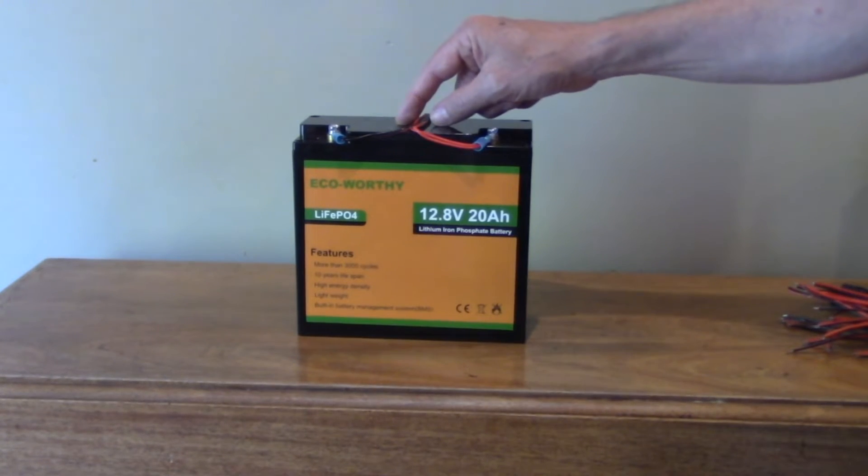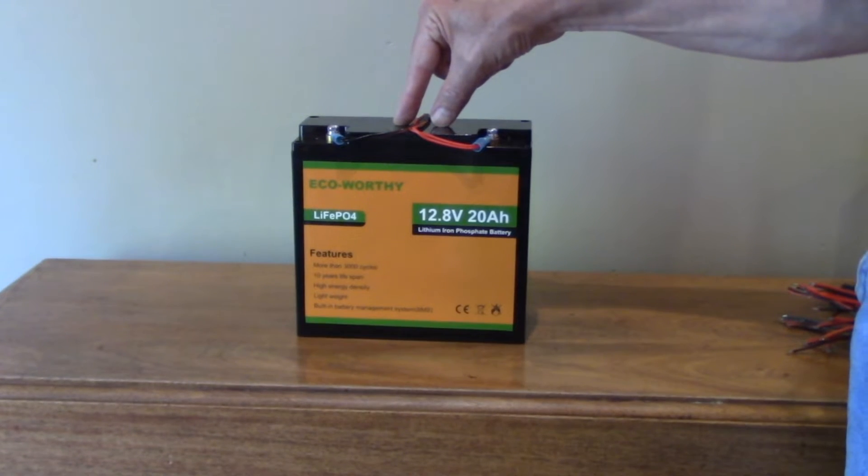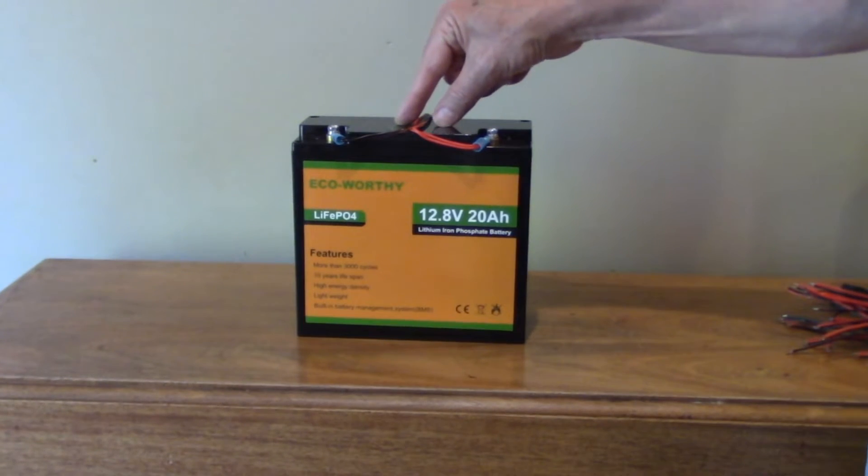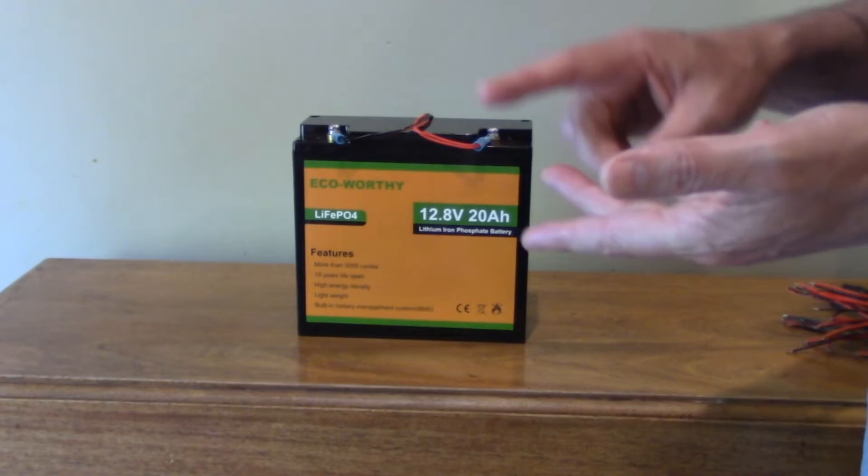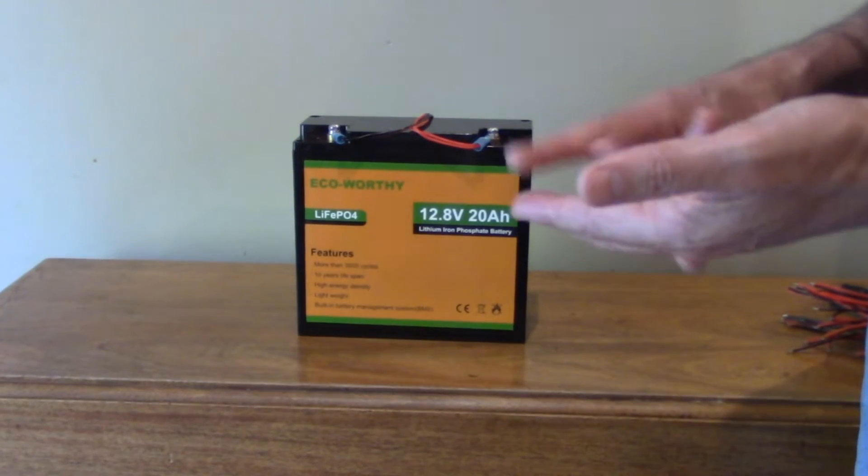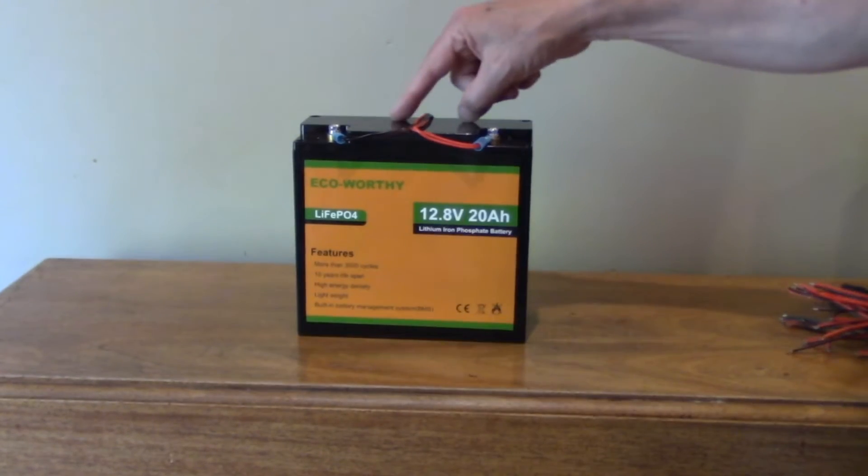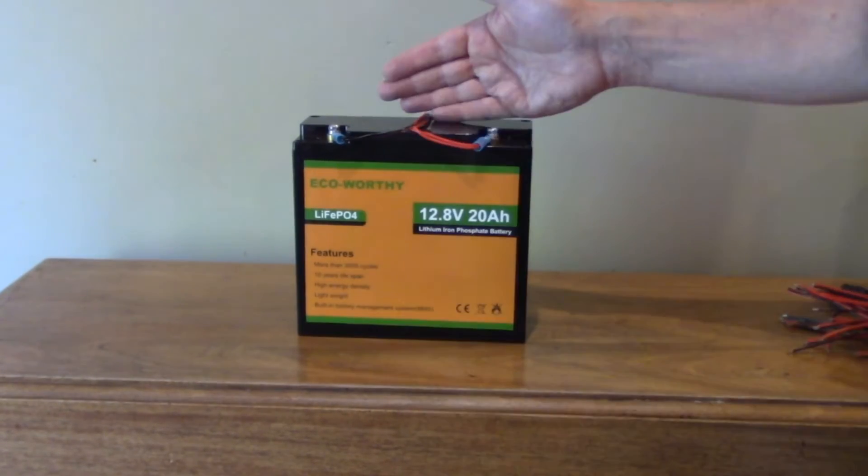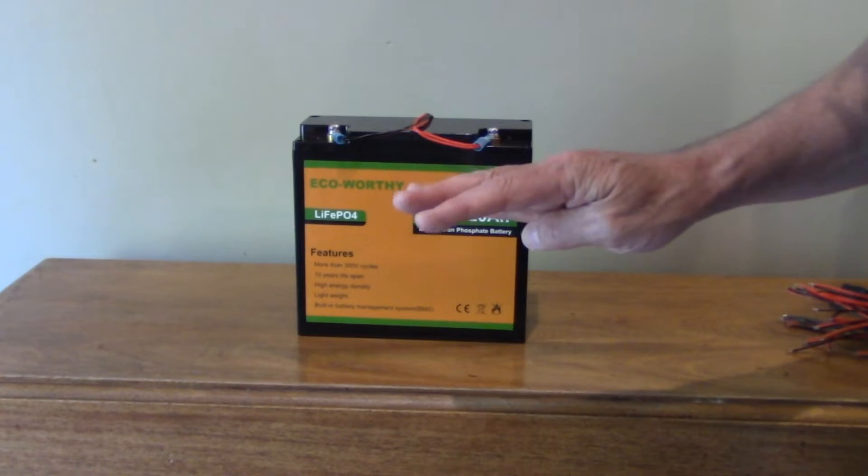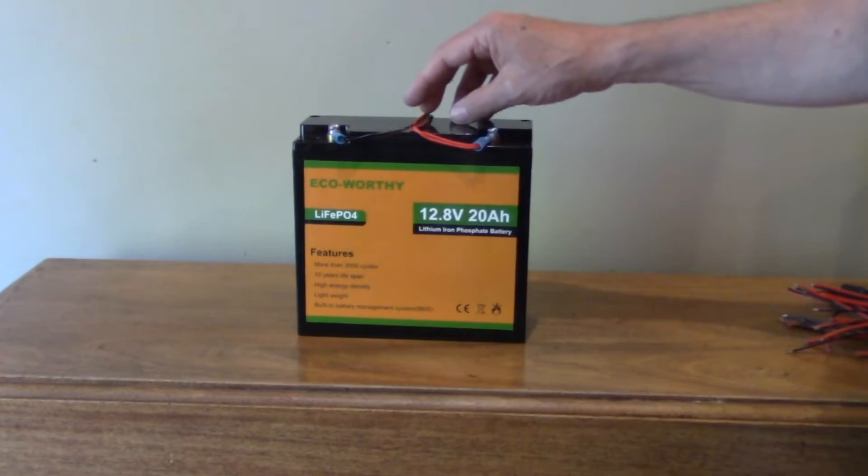But what this battery can do is that this can do a 20 amp continuous discharge rate. So that means that if you're running dew heaters and your equipment and your focusers and everything else and then you go to slew, you have enough capacity, at least for my particular mount, because EQM35 Pro requires a minimum of 4 amps to slew. And you have to have that 4 amps available.